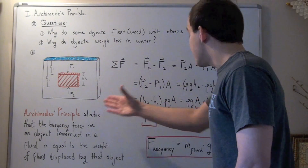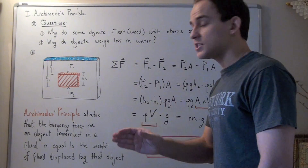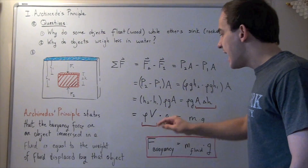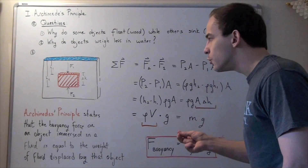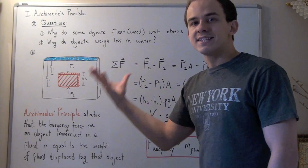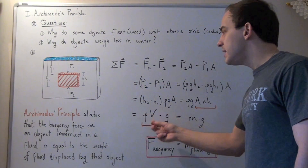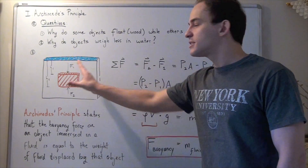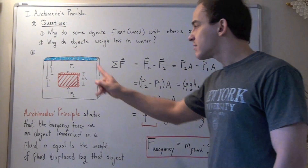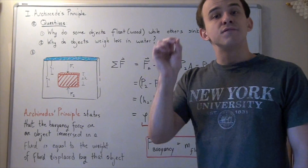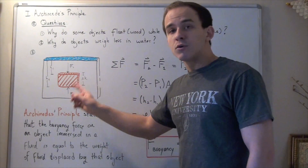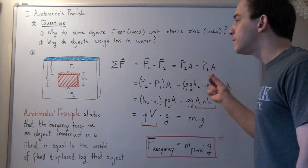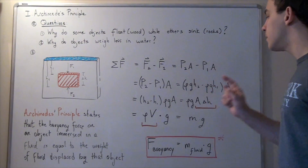But we need to be specific about what this mass is — is it the mass of the block, or the mass of something else? Notice that this density is the density of the fluid and this volume is the volume that the block takes up. So this must be the mass of the fluid displaced by this block — not the mass of the block itself, but the mass of the fluid that this block displaces.